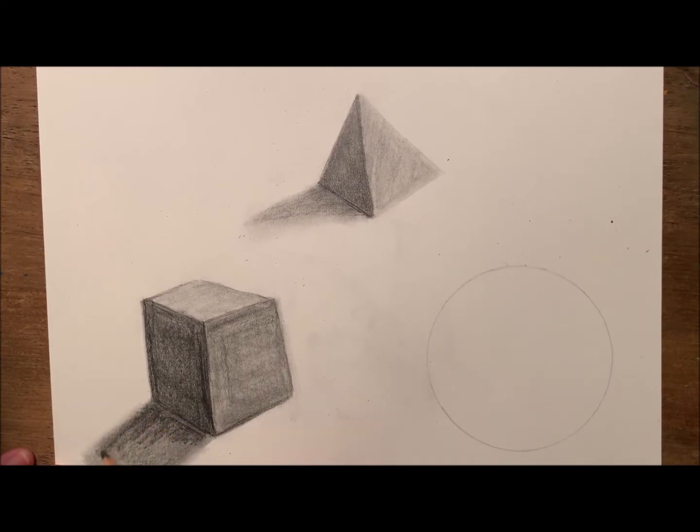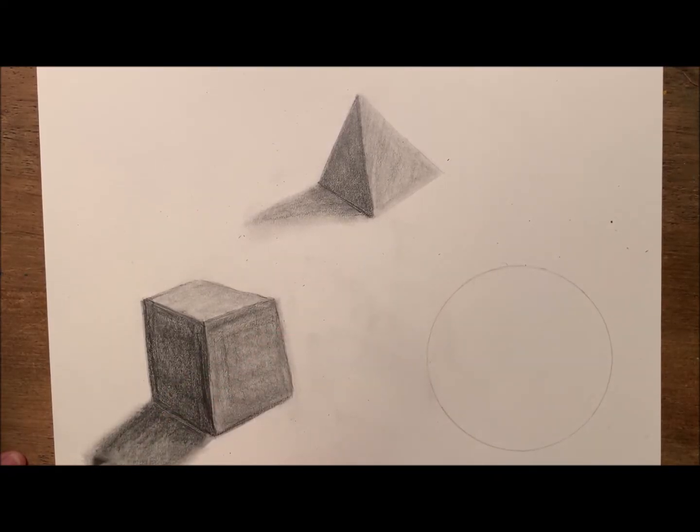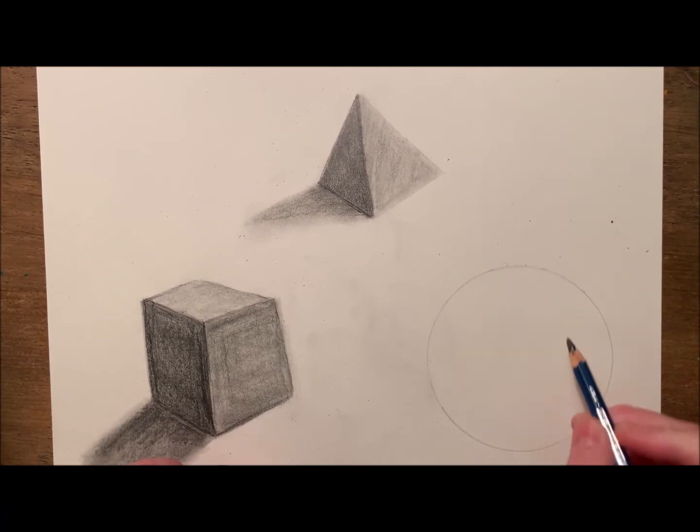Finally, I'm using that darker pencil again to go back and add a little bit of darkness to the edge of my shadow to give a little bit of depth. All right, now that my cube is done, I'm ready to work on the sphere.